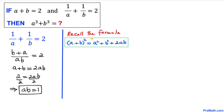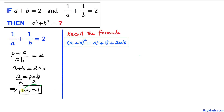Here's our next step. Let's recall the formula: (a plus b)² equals a² plus b² plus 2ab. We want to find a³ plus b³, but first we need to find a² plus b². We know a plus b equals 2 and ab equals 1, so let's fill in the blanks.